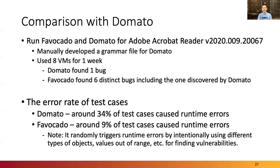To demonstrate the effectiveness of Favocado, we compared it with Domato. For Domato, we implemented a grammar file for PDF binding objects, specifically constructing it only for the Field and Annot objects. For a fair comparison, we also led Favocado to fuzz the same binding objects. Domato discovered one use-after-free vulnerability, while Favocado discovered six distinct bugs, including the one found by Domato. Furthermore, we checked the error rate of test cases: around 34% of Domato's test cases caused runtime errors, while only around 9% of Favocado's test cases caused runtime errors.